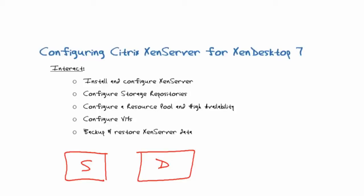With desktop virtualization there tends to be more reboot activity, more logon activity, and more unpredictable activity because of how users are interacting with their virtual machines. Because of all the resource consumption that goes on in desktop virtualization, it can be a good idea to actually segregate out the two infrastructures so that the behaviors on one side don't end up consuming resources that would be otherwise better used on the other side.